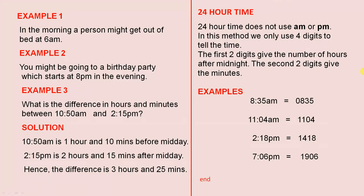Example 3. What is the difference in hours and minutes between 10:50 AM and 2:15 PM? Solution: 10:50 AM is one hour and 10 minutes before midday. 2:15 PM is two hours and 15 minutes after midday. Hence, the difference is 3 hours and 25 minutes.